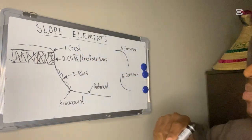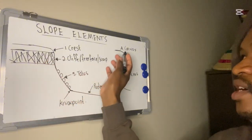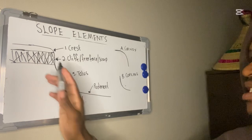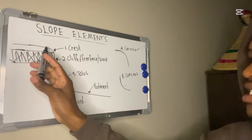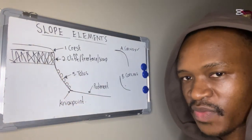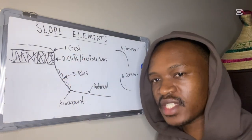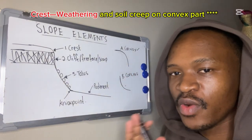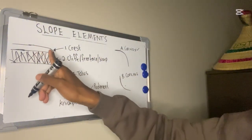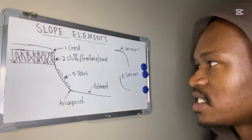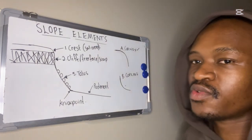Now, if you look at the first slope element — the crest, right at the top — it is convex. So our crest has a convex slope. It is made up of thin soils, and the dominant geomorphological process there is soil creep. You will learn more about soil creep when you move on to mass movement.